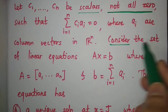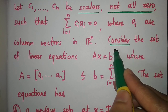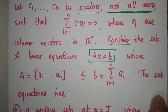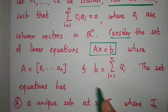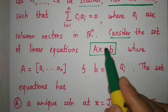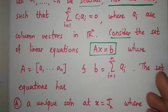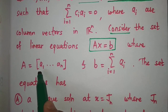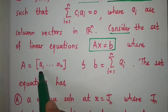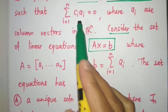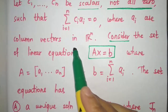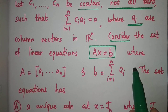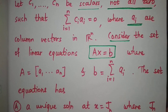Consider the set of linear equations Ax = b. We have given a set of linear equations Ax = b, where A is the matrix consisting of these column vectors ai's, and b is the summation of all these ai's.